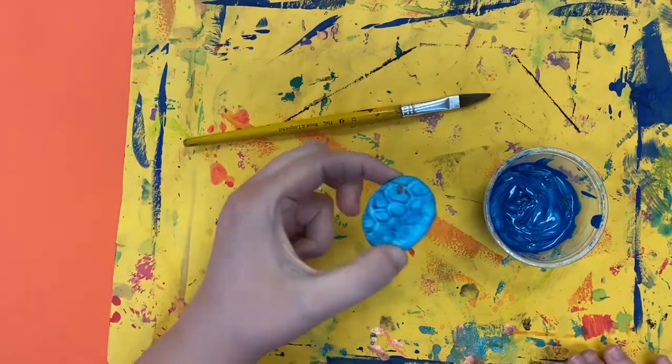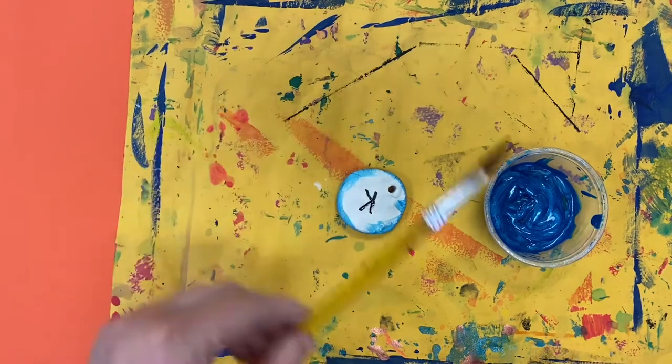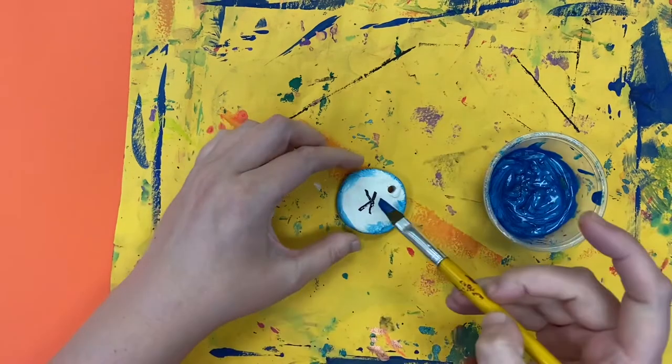The paint on the front of my pendant is dry and so now I'm ready to paint the back of my pendant. I'm going to use the same color that I used before and I'm also going to use the same technique.